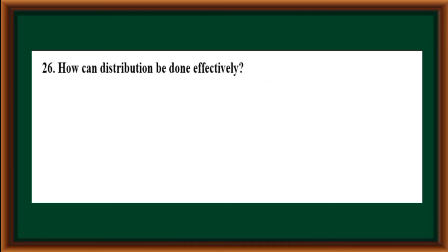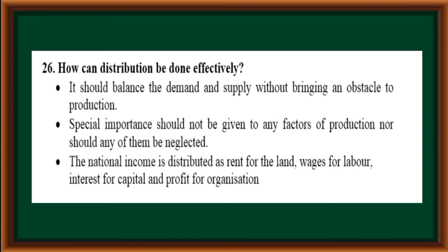How can distribution be done effectively? It should balance demand and supply without bringing an obstacle to production. Special importance should not be given to any factor of production, nor should any be neglected. National income is distributed as rent for land, wages for labour, interest for capital, and profit for organisation.